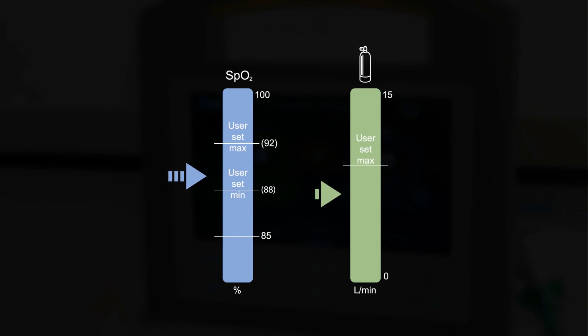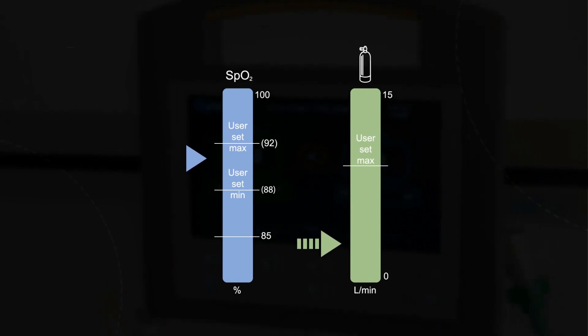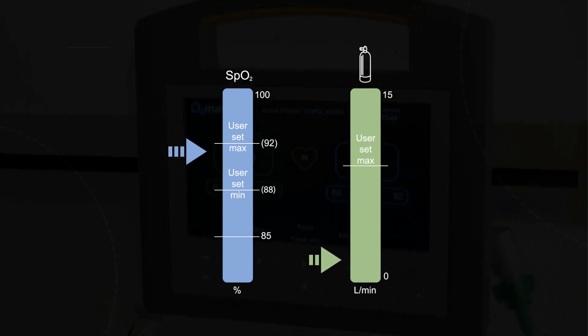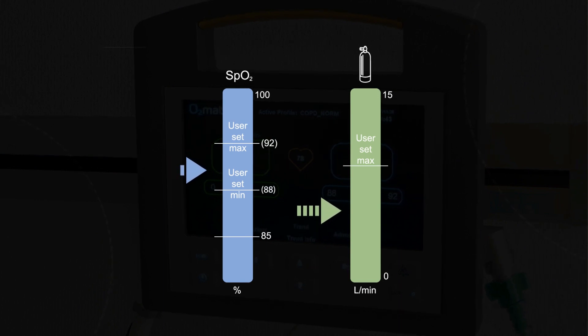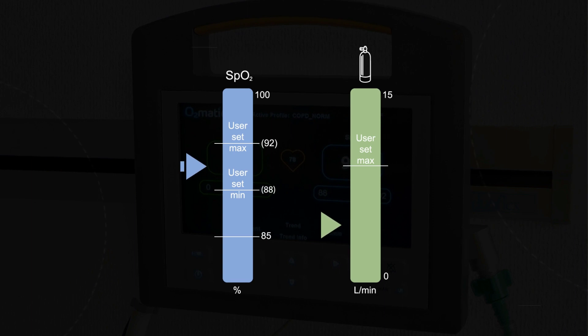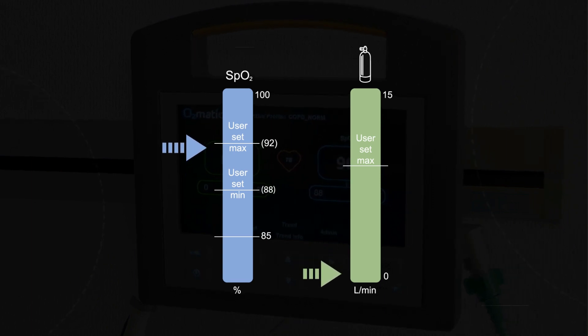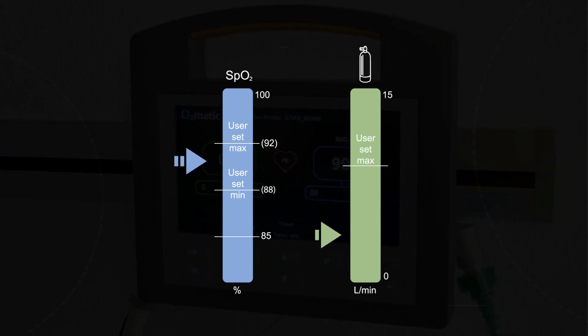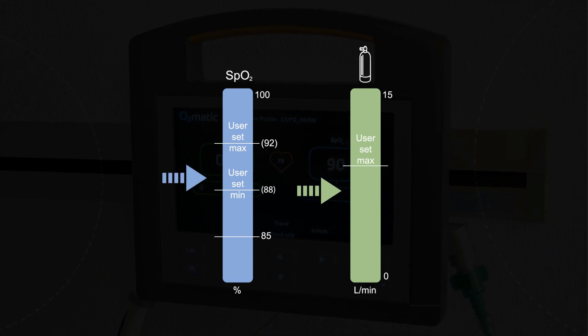O2matic is a closed loop system which continuously measures the patient's oxygen saturation by pulse oximetry and adjusts the oxygen flow to maintain the saturation within a target interval. O2matic is designed for hospital use and in this study it was used on respiratory wards for patients with COPD.